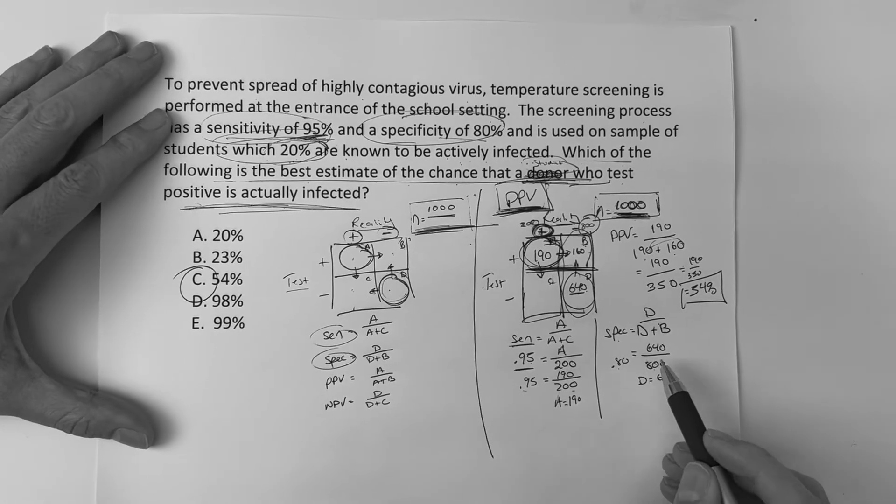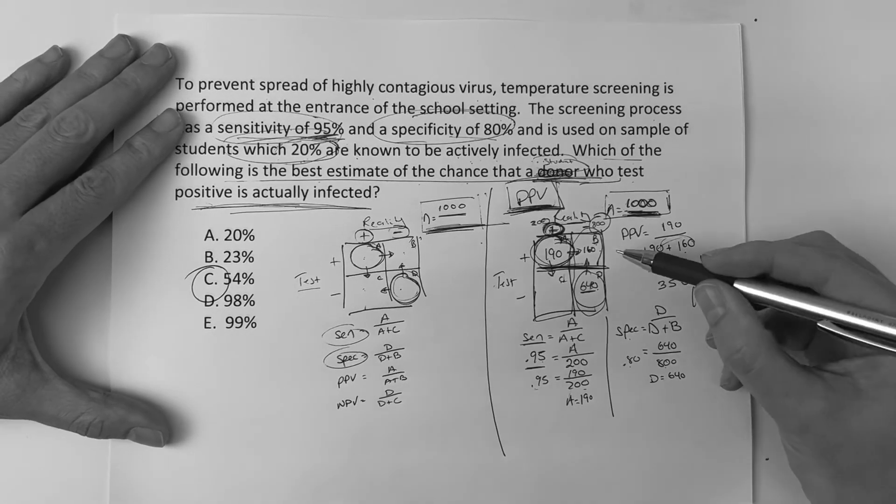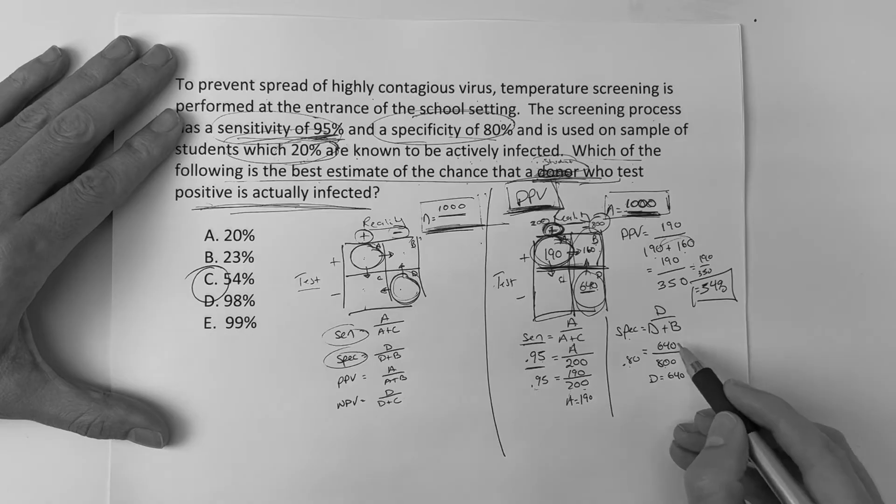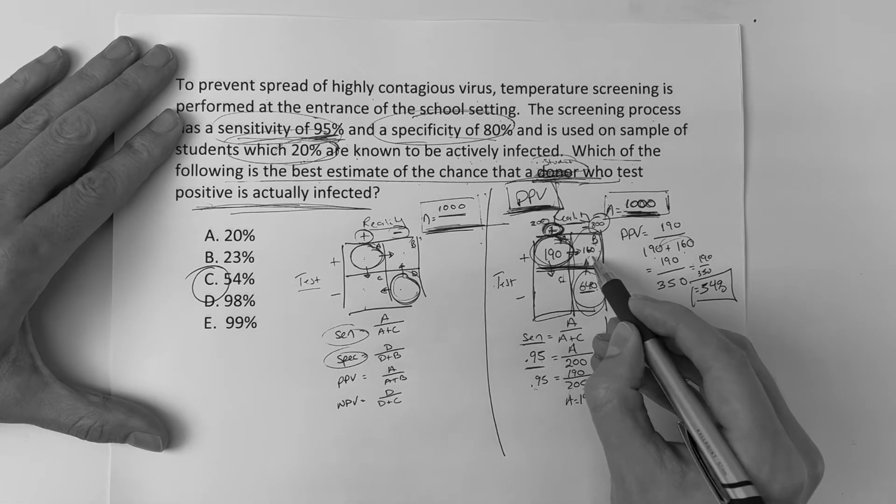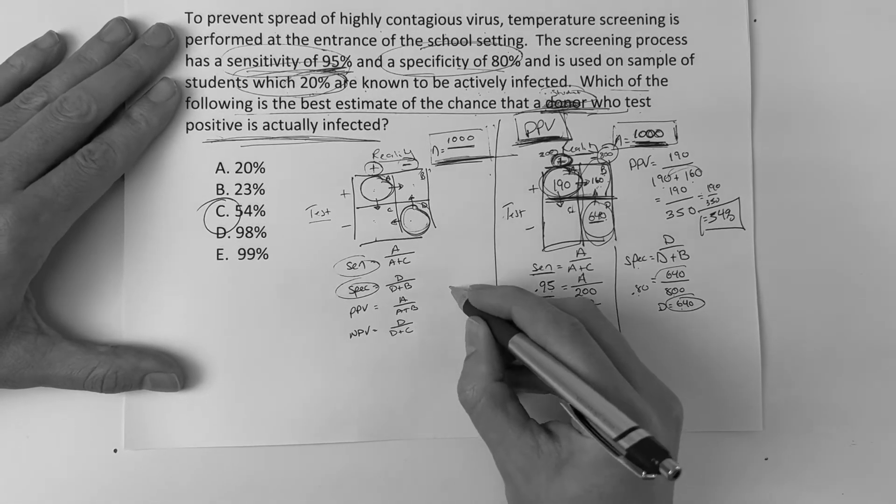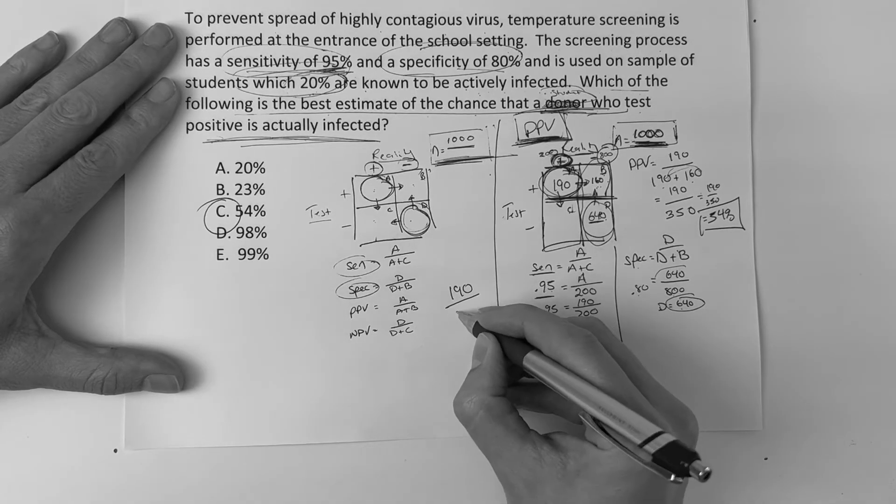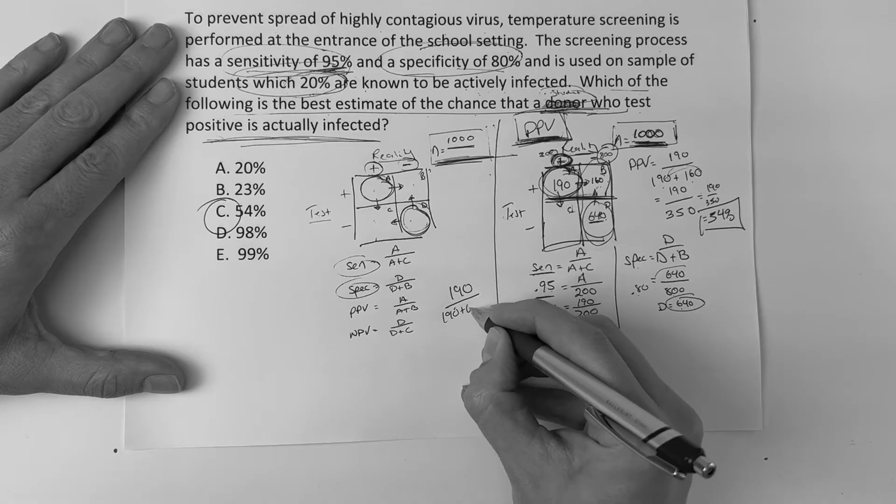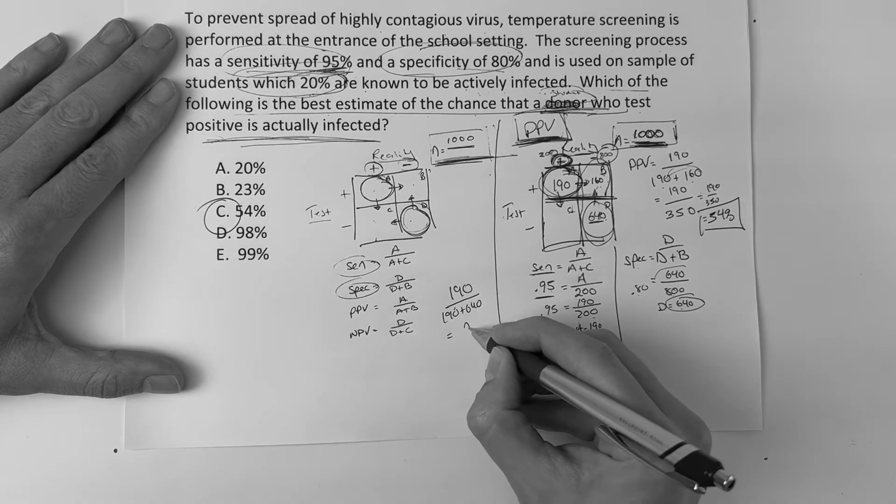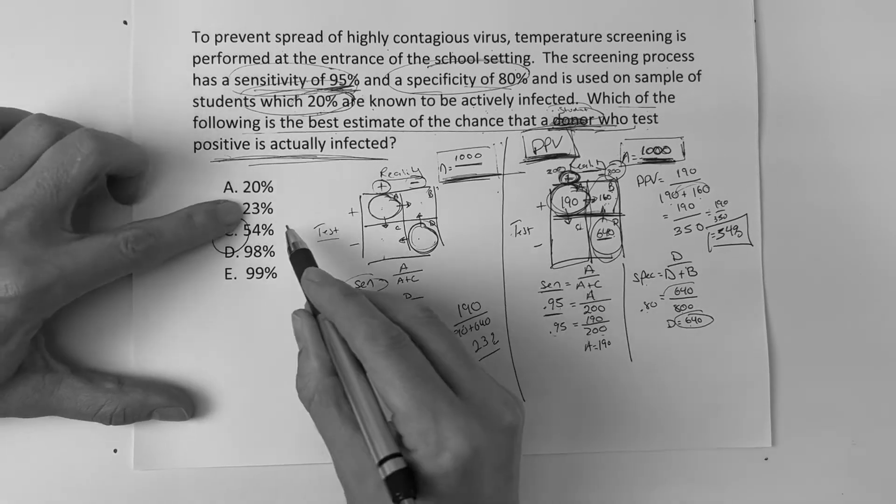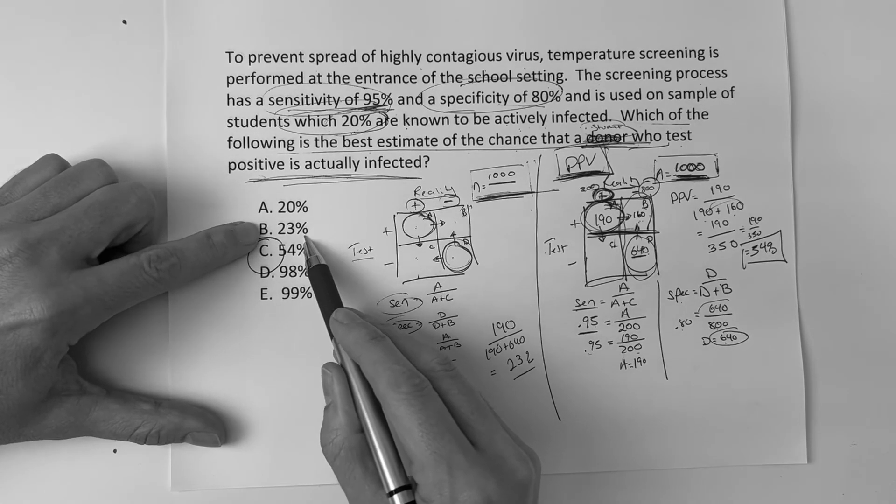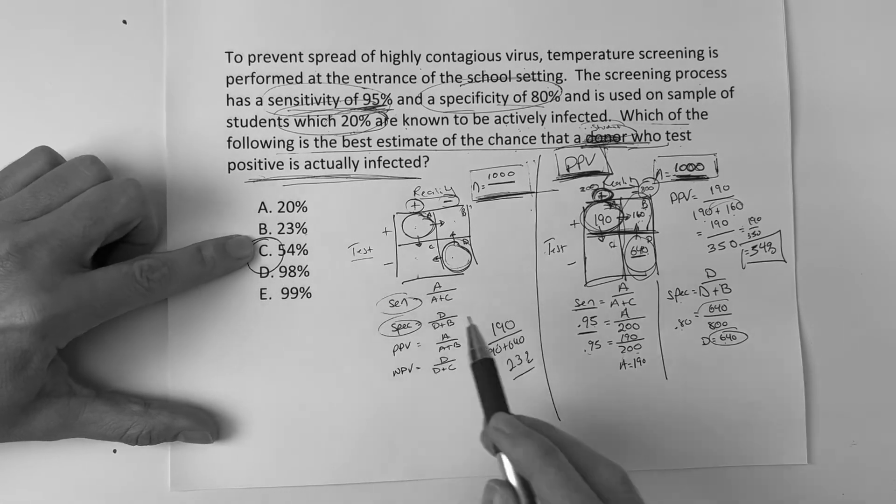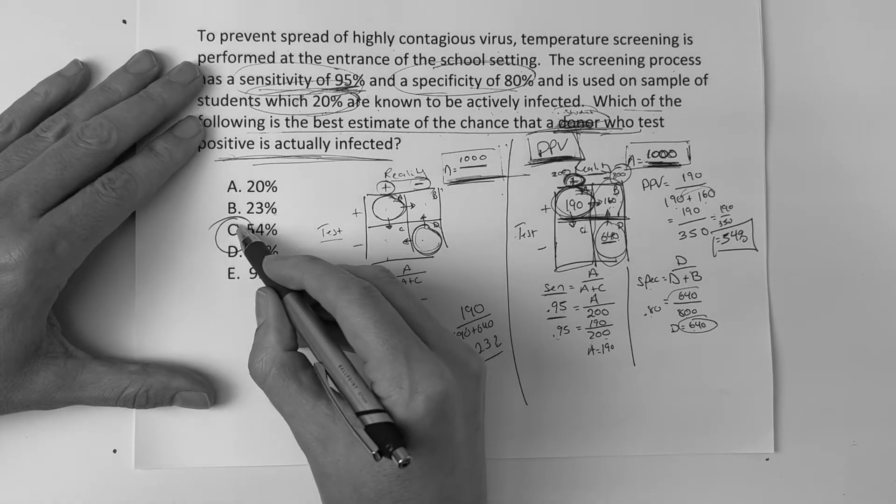Now, where are they going to trip you up? One of the trip up things was, if you would have thought that that 640 would have went there, and you did 190 over 190 plus 640, that's going to get you 23%, which is, of course, a distractor in that thing, right? So, the correct answer, the only answer, is going to be 54%.